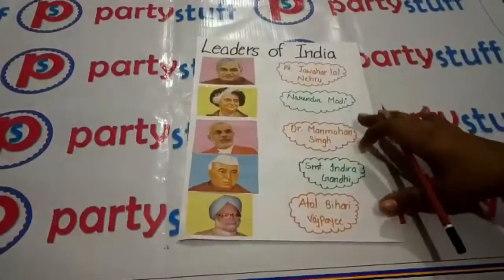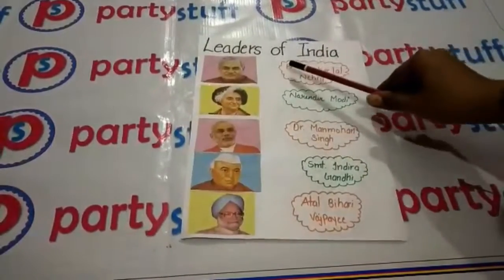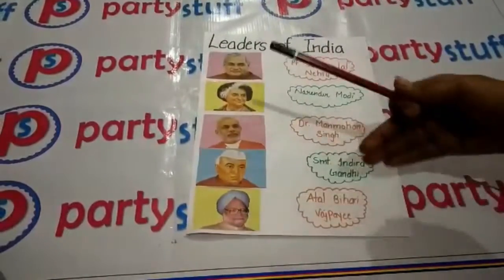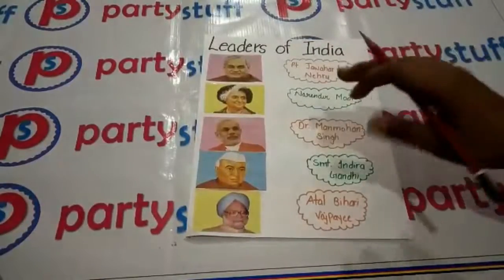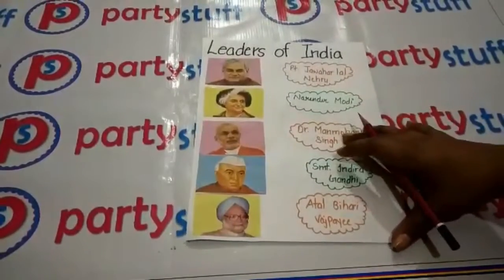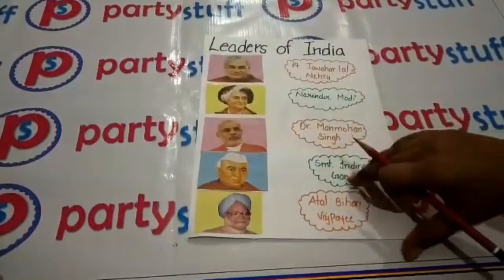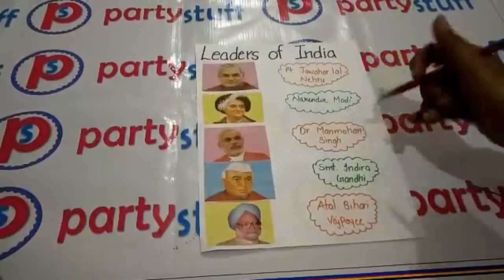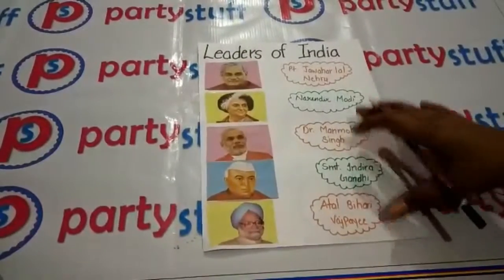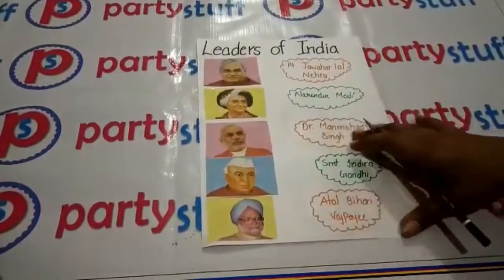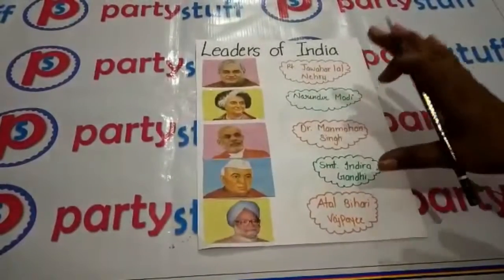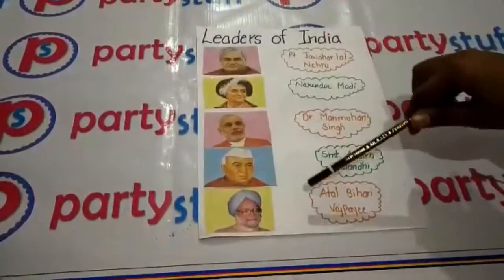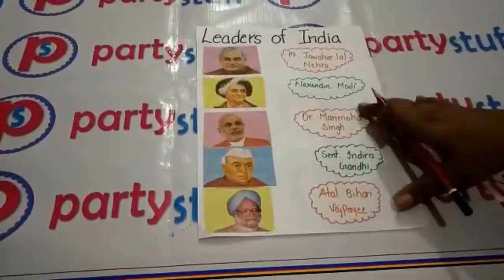I have a sheet paper on which I have written leaders of India pictures — five leader pictures. You can take ten or twenty pictures accordingly, and for that you need to arrange a big sheet paper. If you play this game with kids, five pictures are enough, but for adults you need more. For each member you have to arrange a colored photo.